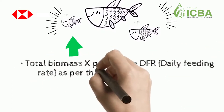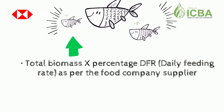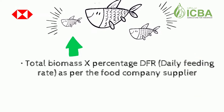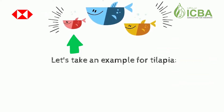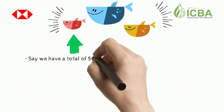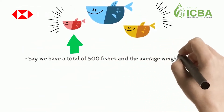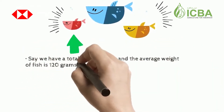The fish feed for each tank is calculated as follows: total biomass multiplied by the percentage DFR (daily feeding rate), as per the food company supplier. Let's take an example for tilapia.